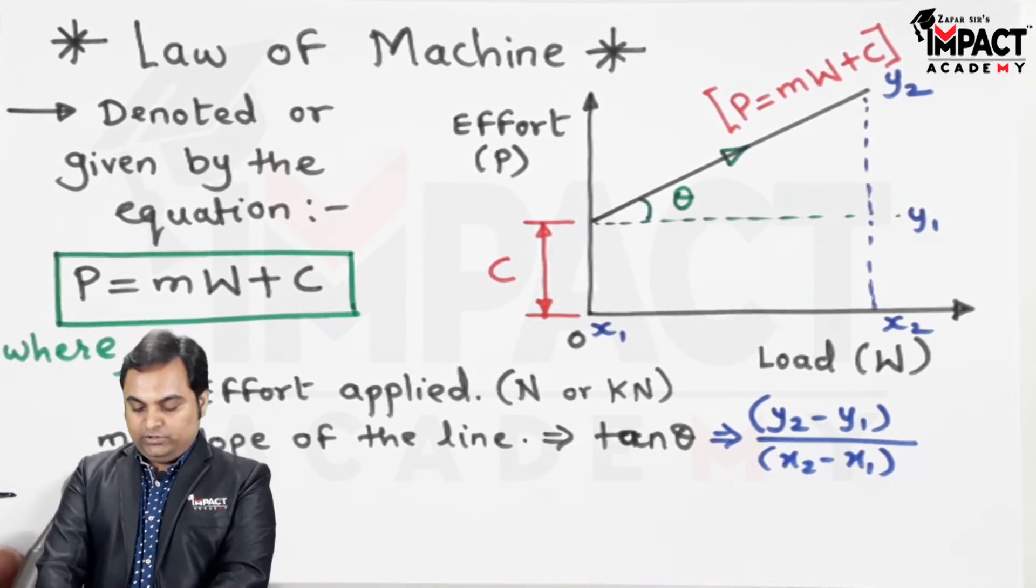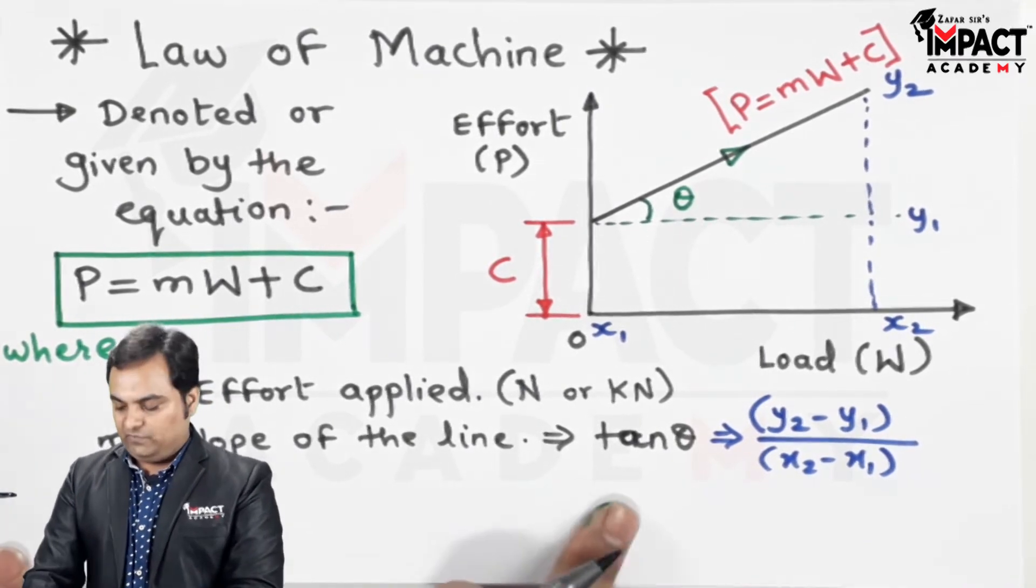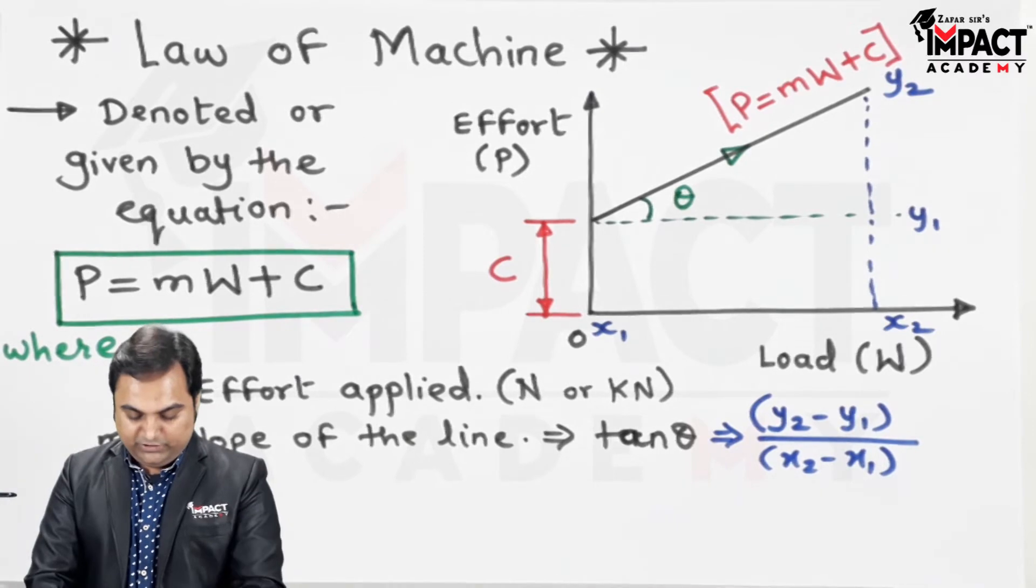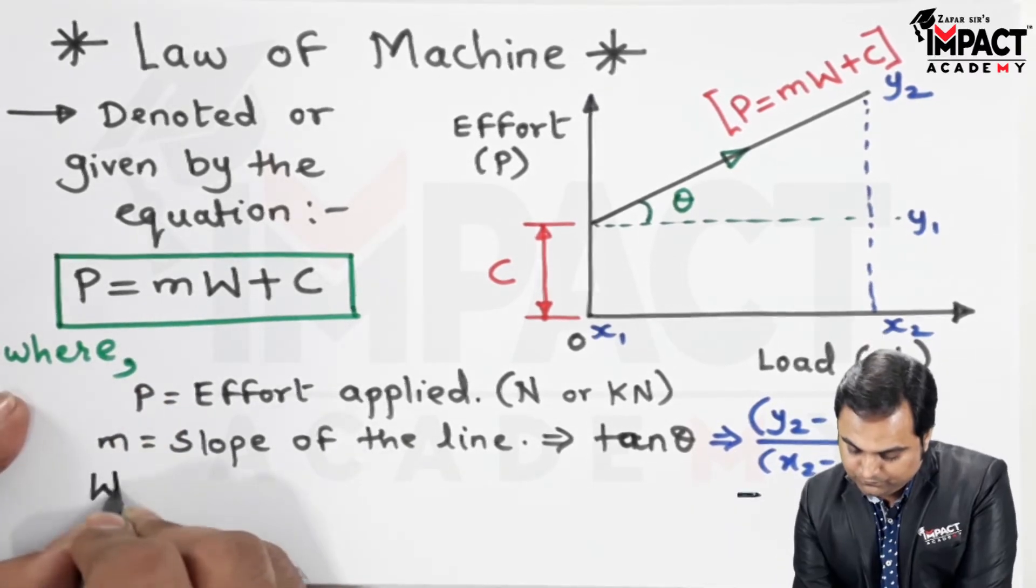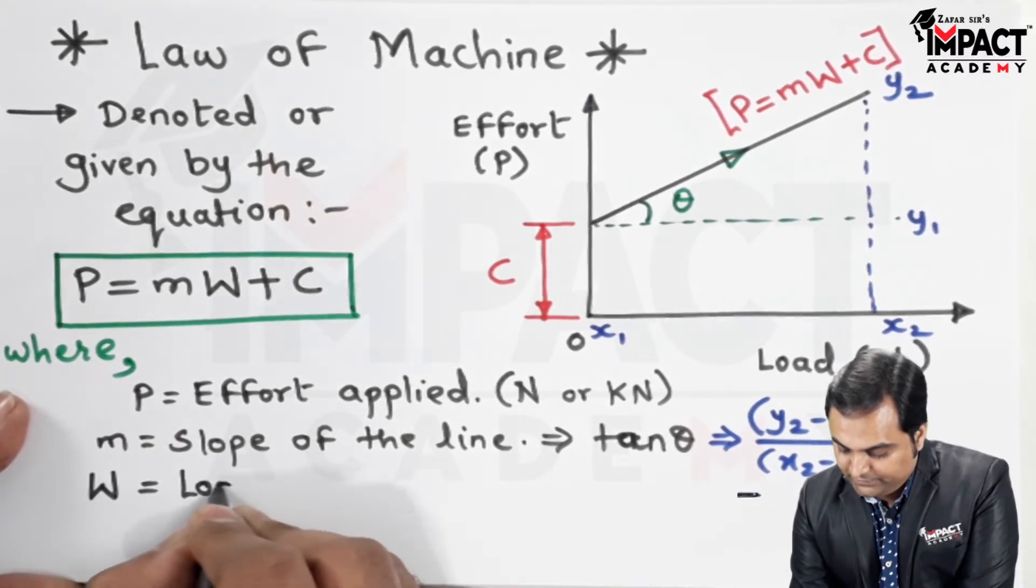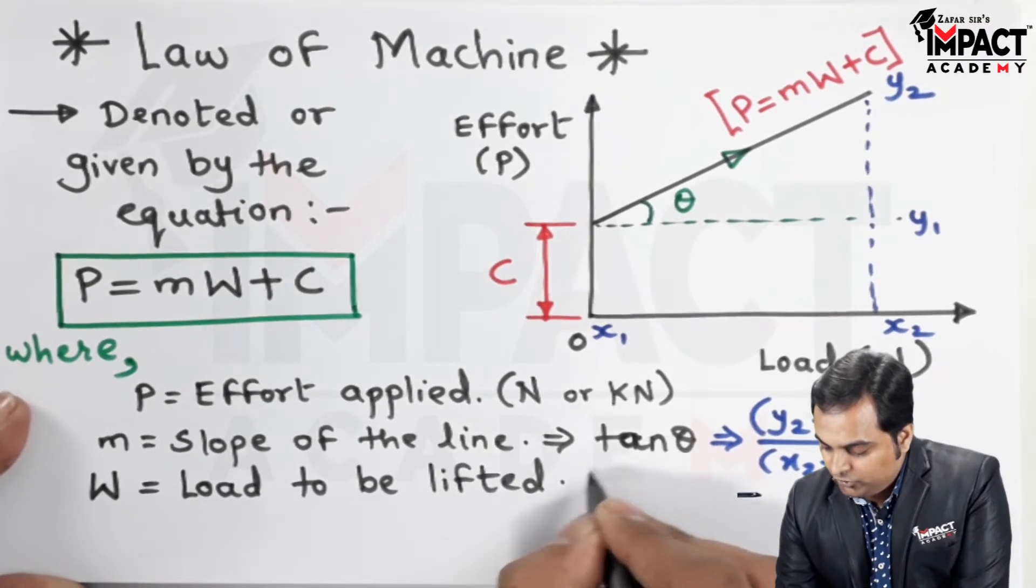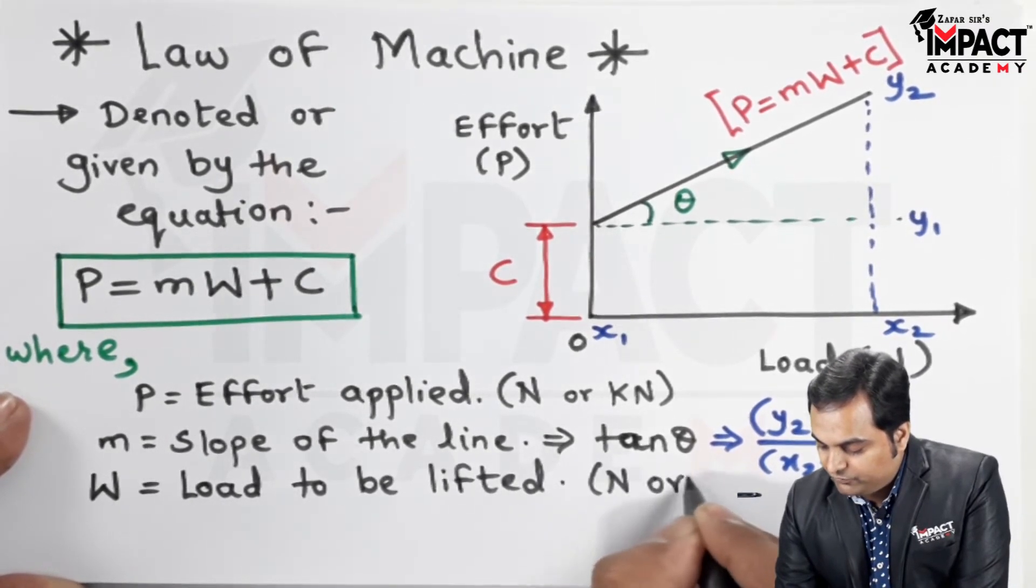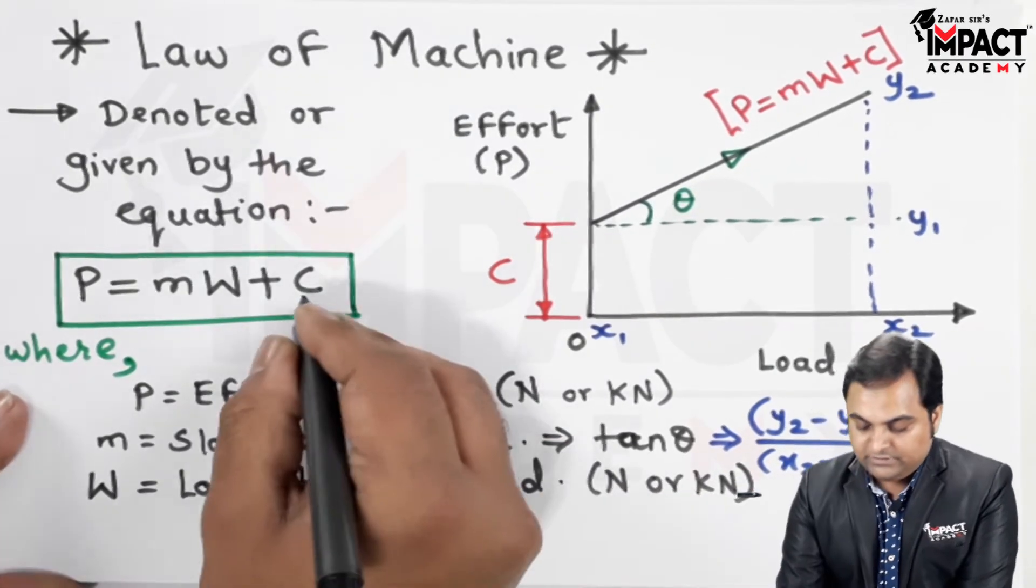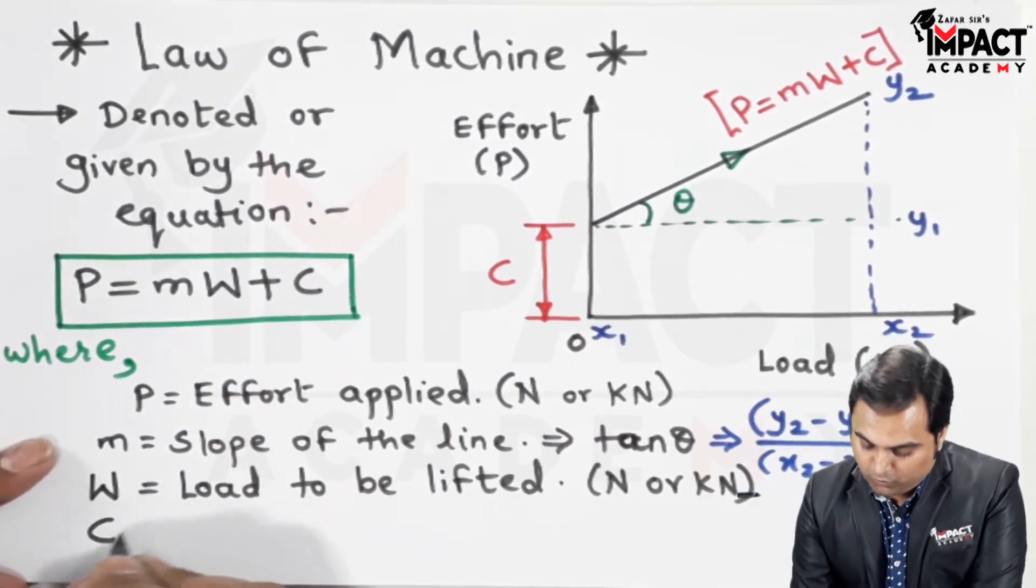Then W is the load to be lifted. Unit of W either in terms of newton or kilo newton. This C is called as y-intercept, and even this effort is having a unit of newton or kilo newton.